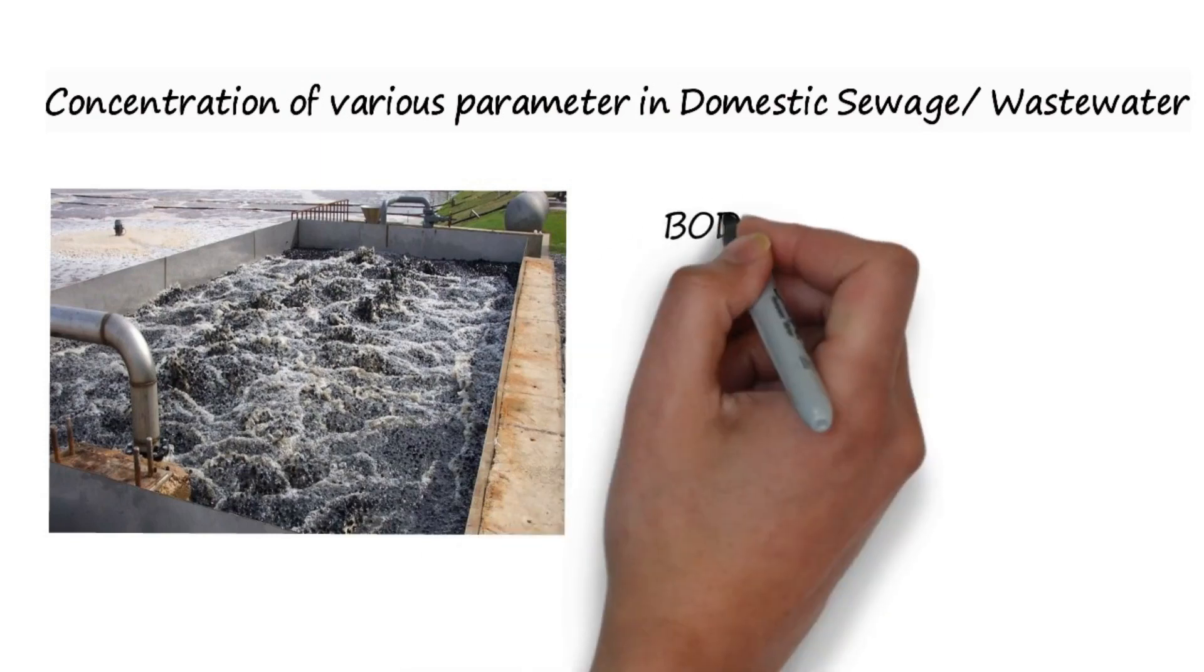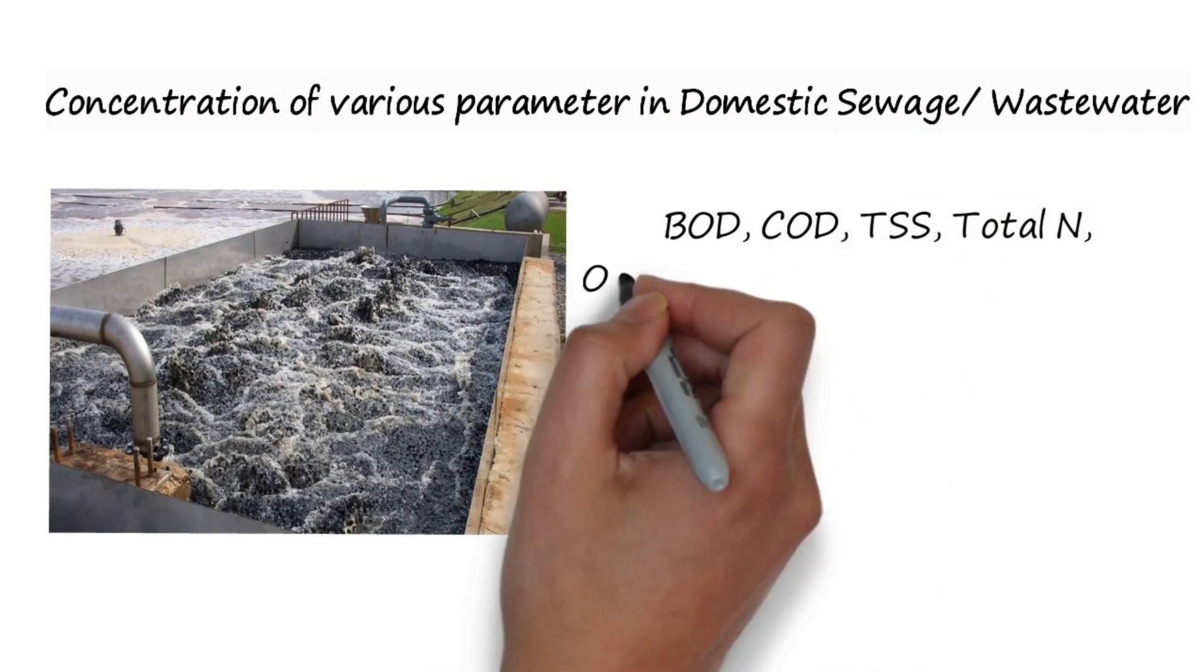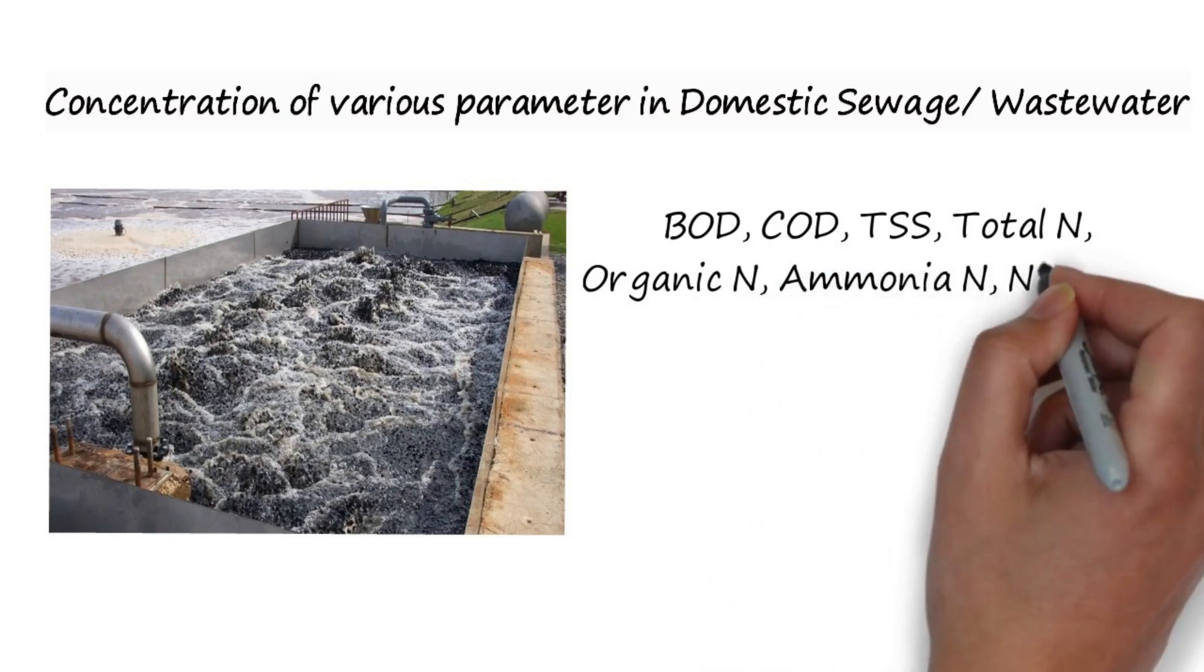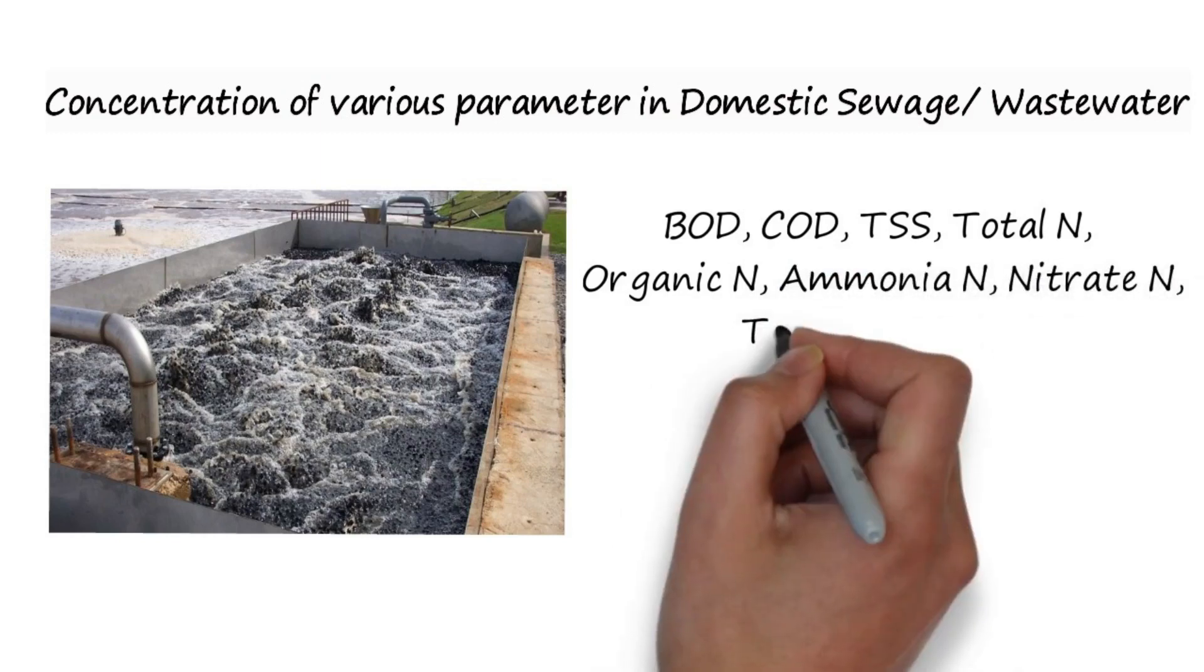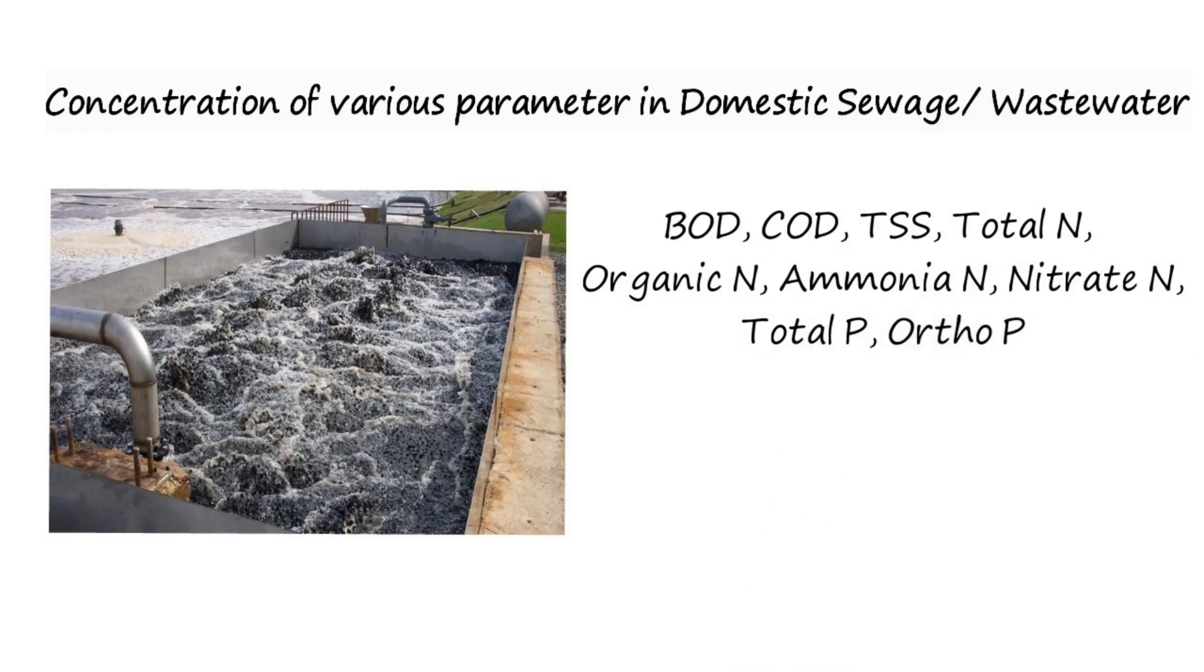Here we will see how to find the concentration of sewage or domestic parameters like biochemical oxygen demand BOD, chemical oxygen demand COD, total suspended solid TSS, total nitrogen, organic nitrogen, ammonia nitrogen, nitrate nitrogen, total phosphorus and orthophosphorus.